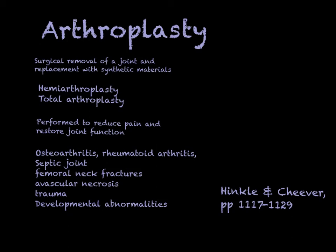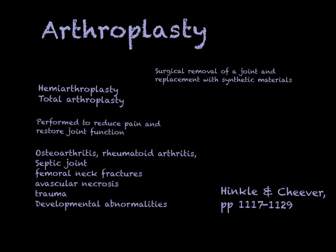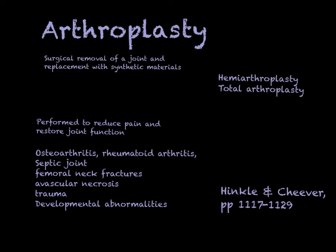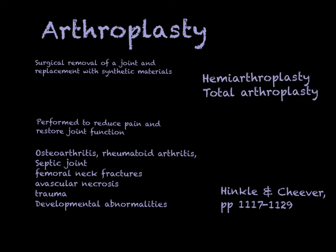We're finally on to arthroplasty, which is really the last component of Unit 8. We're going to focus on total hip replacement and total knee replacement. Arthroplasty is a surgical removal of a diseased joint and replacement with synthetic materials — stainless steel, titanium, plastic, or polyethylene. There are a number of shapes and materials used to make the new joint. You can have a partial joint replacement called a hemiarthroplasty, or a total arthroplasty, which is most commonly seen.